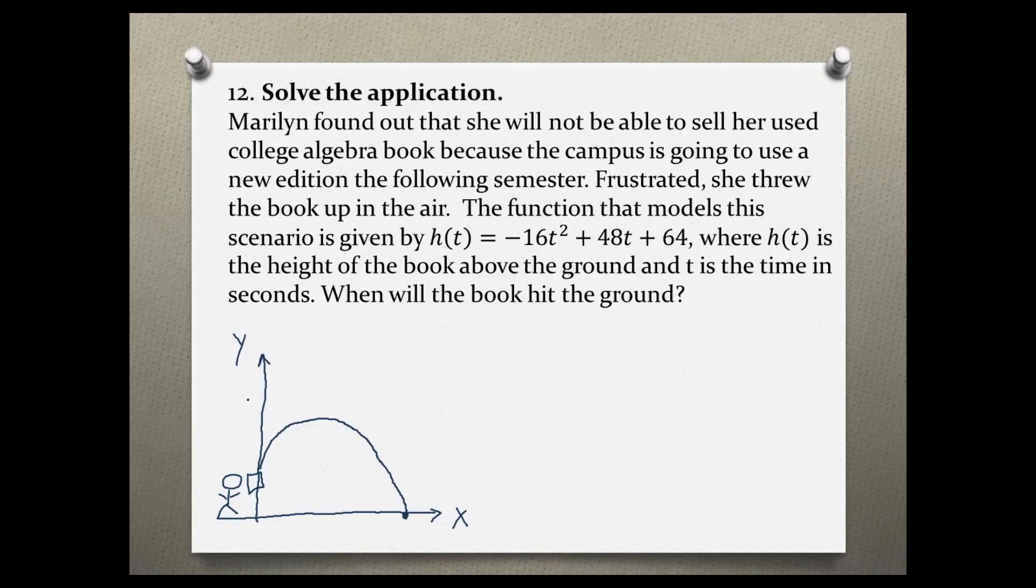So at this point basically the y equals 0, so we can set this equation equal to 0 to find where is that point. So 0 equals negative 16t squared plus 48t plus 64.